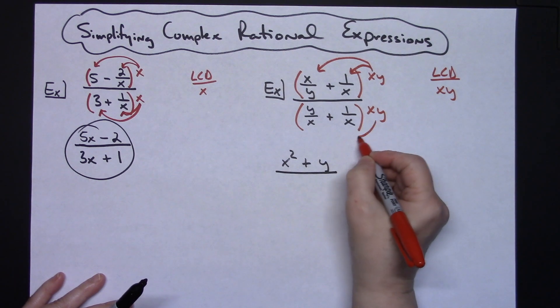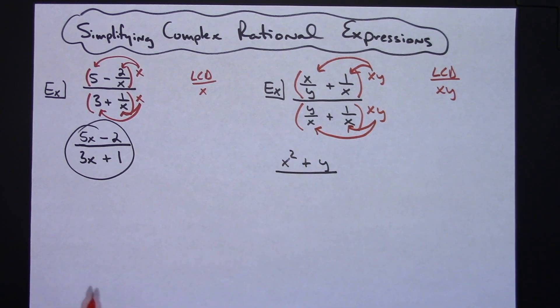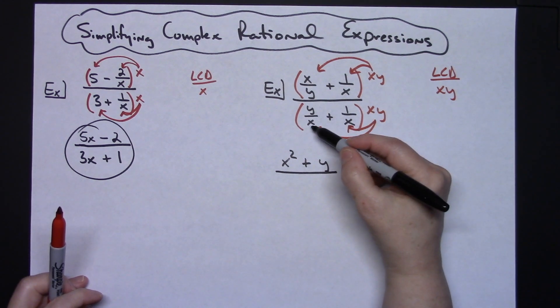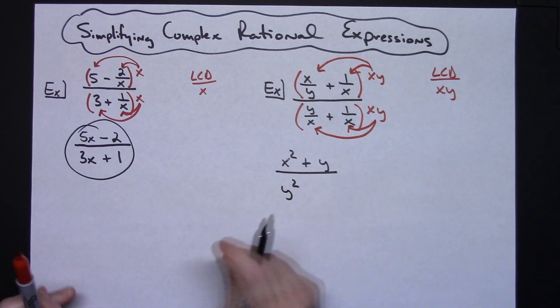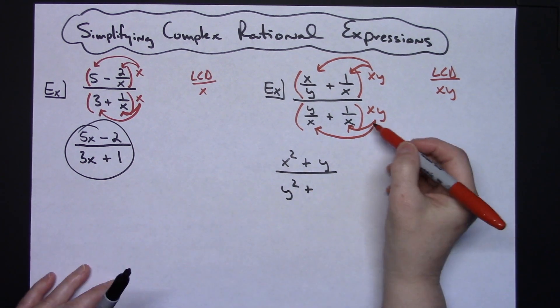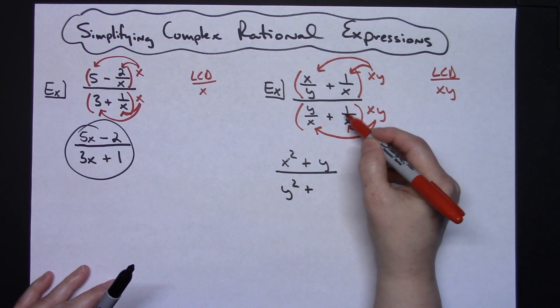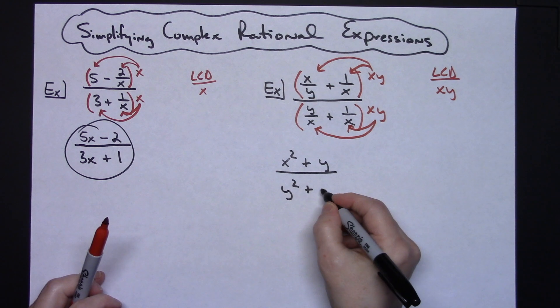Distributing on the bottom, x times y times the first fraction, x times y times the second fraction. These x's are going to cross out, leaving me with two y's right there, so I'll have a y squared. Going ahead and putting that plus sign down then, distributing the x times y to the 1 over x, the x's are going to cross out, leaving me with a y right there.